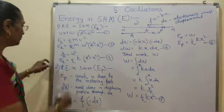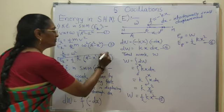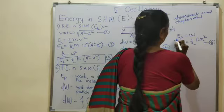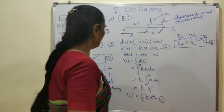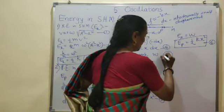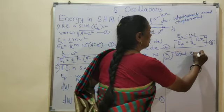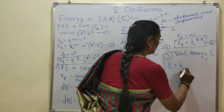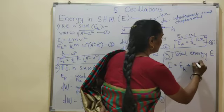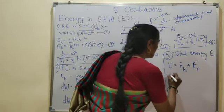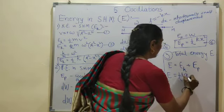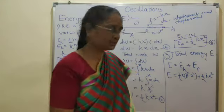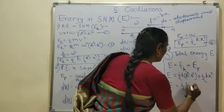We now have two relations: one for kinetic energy and one for potential energy. If we add both these energies, we get the total energy E. E is the sum of kinetic energy and potential energy. Substituting kinetic energy as half K (A squared minus X squared) and potential energy as half KX squared, we get total energy equals half KA squared.